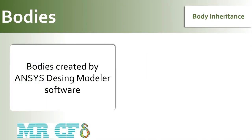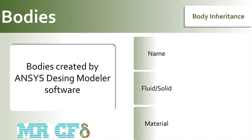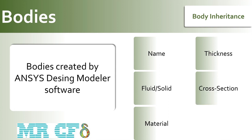When a new body is derived from an existing body, it will inherit several key properties: Name — the name of the source body; Fluid/Solid — whether the body is a solid or fluid region, this property applies only to solid bodies; Material — the material of the source body if defined; Thickness — the source body's thickness if it is a surface body; Cross Section — if the source body is a line body and has a cross section defined; Visibility or suppression status — defined using the options menu for a selected part or body.